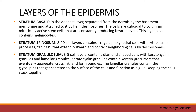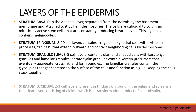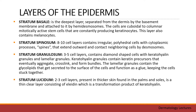Stratum granulosum consists of 3 to 5 cell layers and contains diamond-shaped cells with keratohyaline granules and lamellar granules. Keratohyaline granules contain keratin precursors that eventually aggregate, cross-link, and form bundles. The lamellar granules contain glycolipids that get secreted to the surface of the cells and function as a glue keeping the cells stuck together.